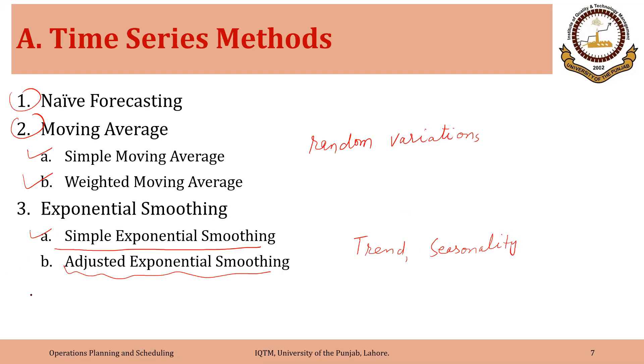The fourth method that falls under time series methods is linear trend line and that is used to forecast for long term.